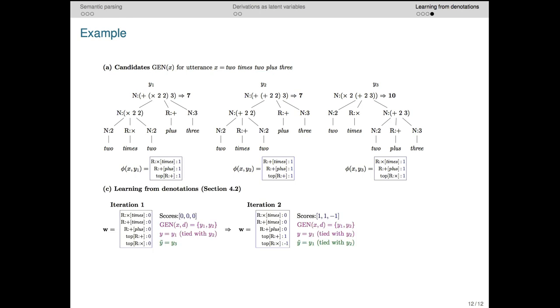The training iterations in this new setup now look different. At step one, we consider two logical forms, y1 and y2, that is the two that have the same denotation as our target logical form y1. Logical form three then incurs the largest training cost as before.